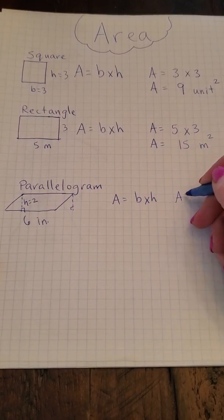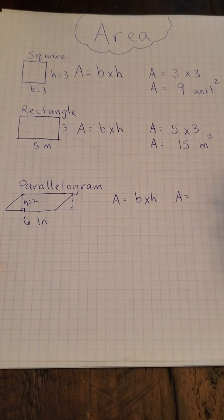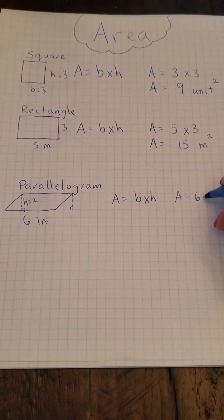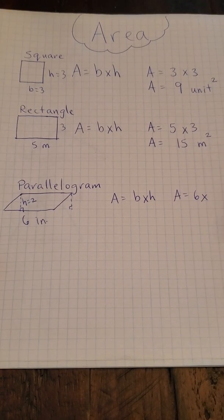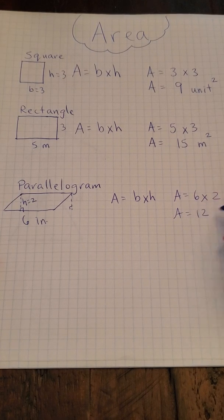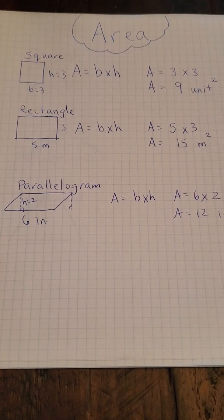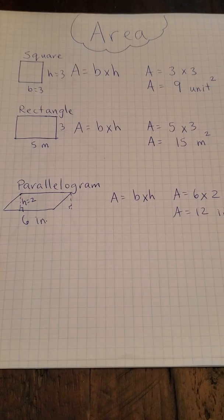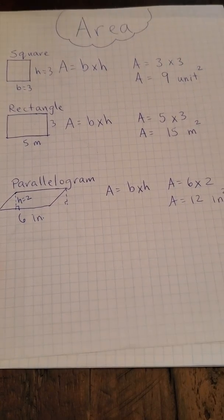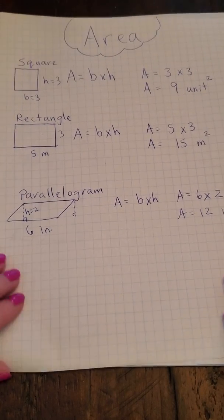Area equals base times height. The base is six, the height is two. Area equals 12 inches squared. And that's how you find the area of a four-sided figure.